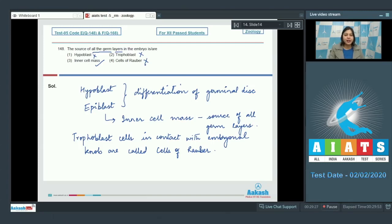Number 4. Cells of Rauber is also incorrect as these are trophoblastic cells. So, the correct answer is option number 3.